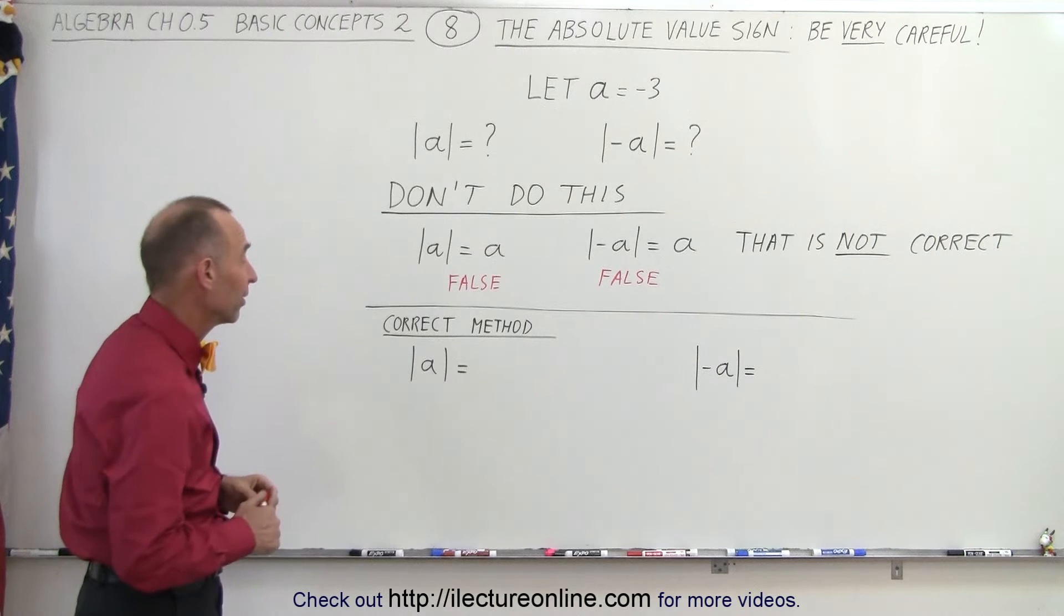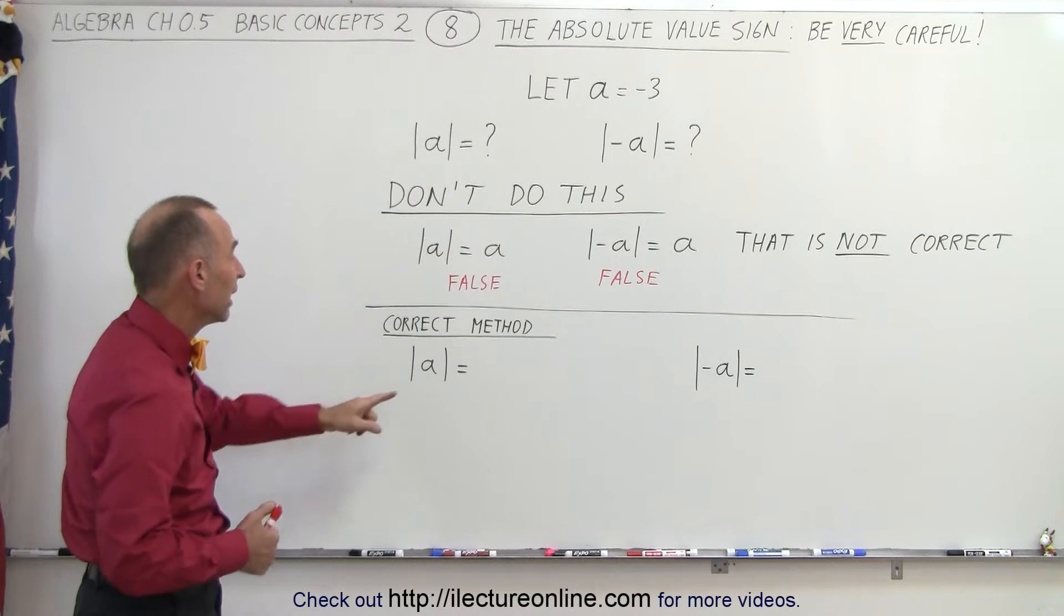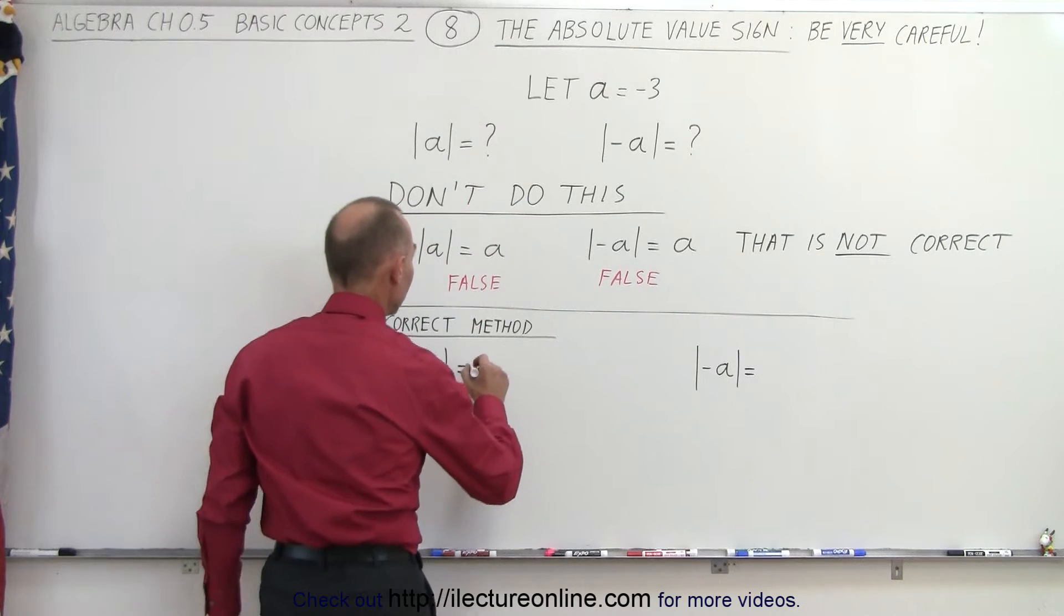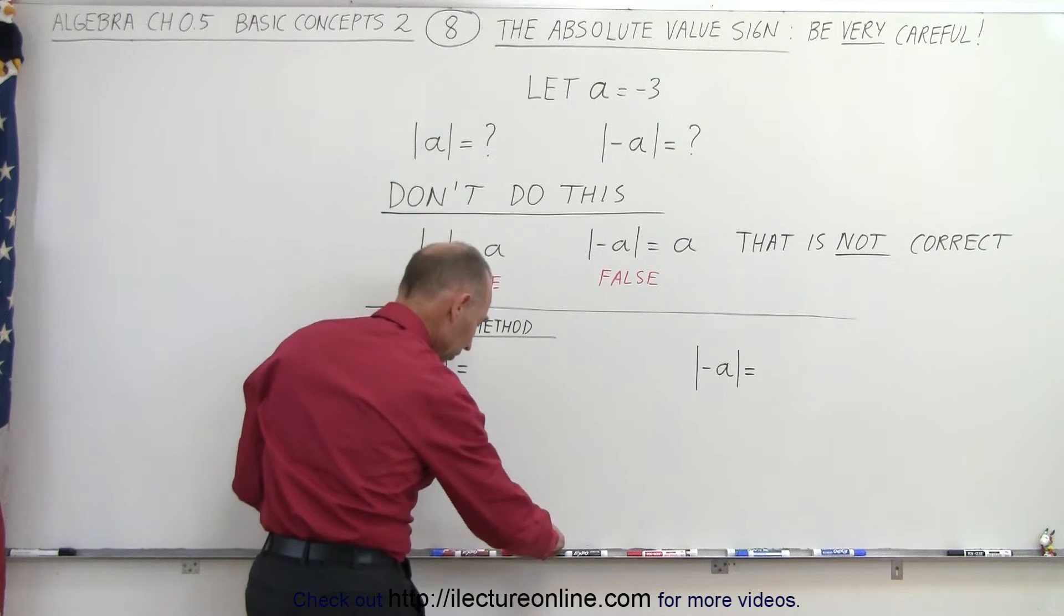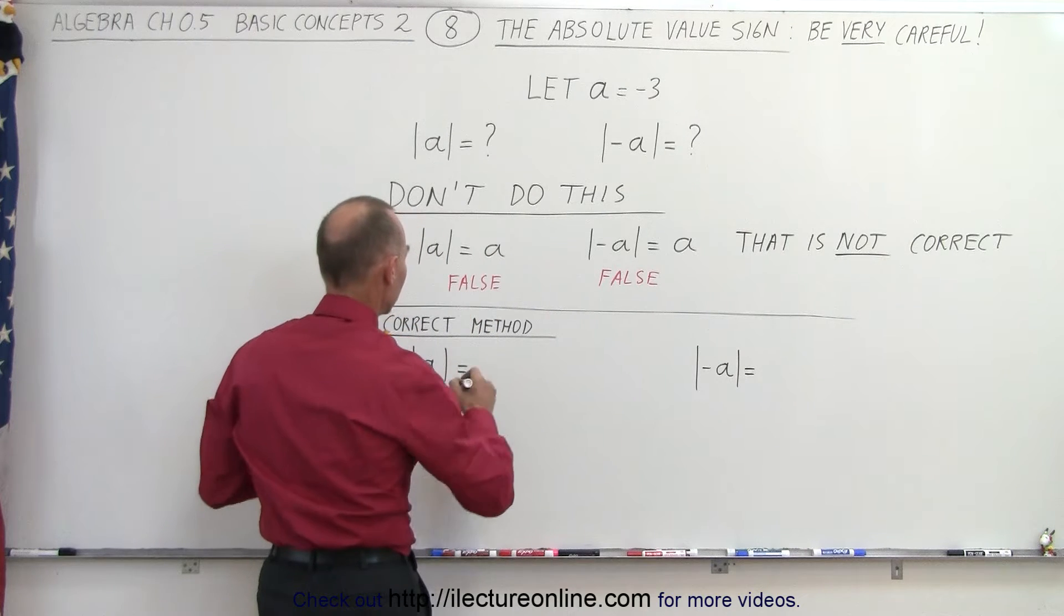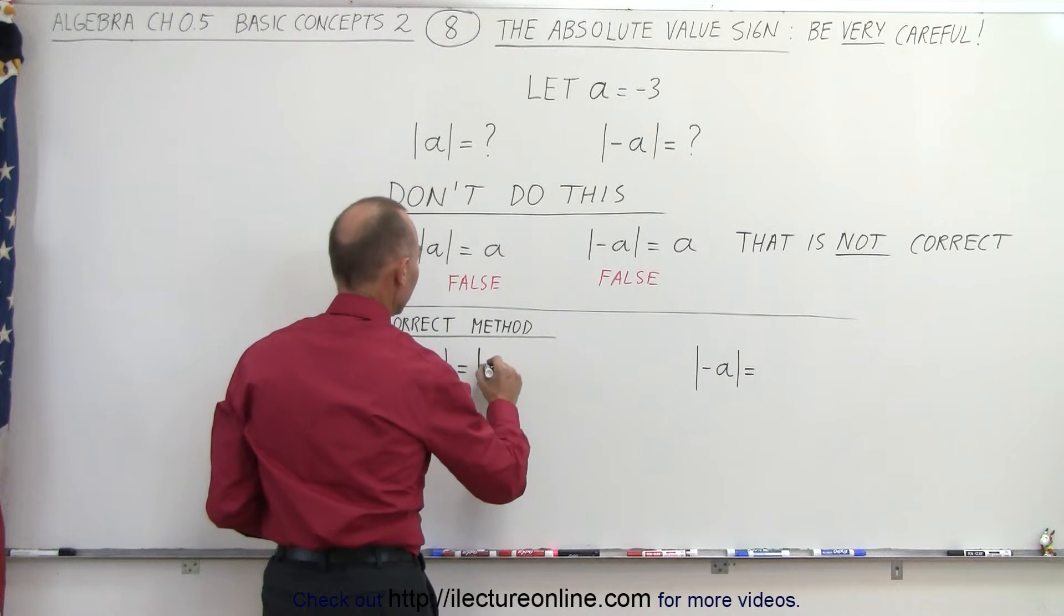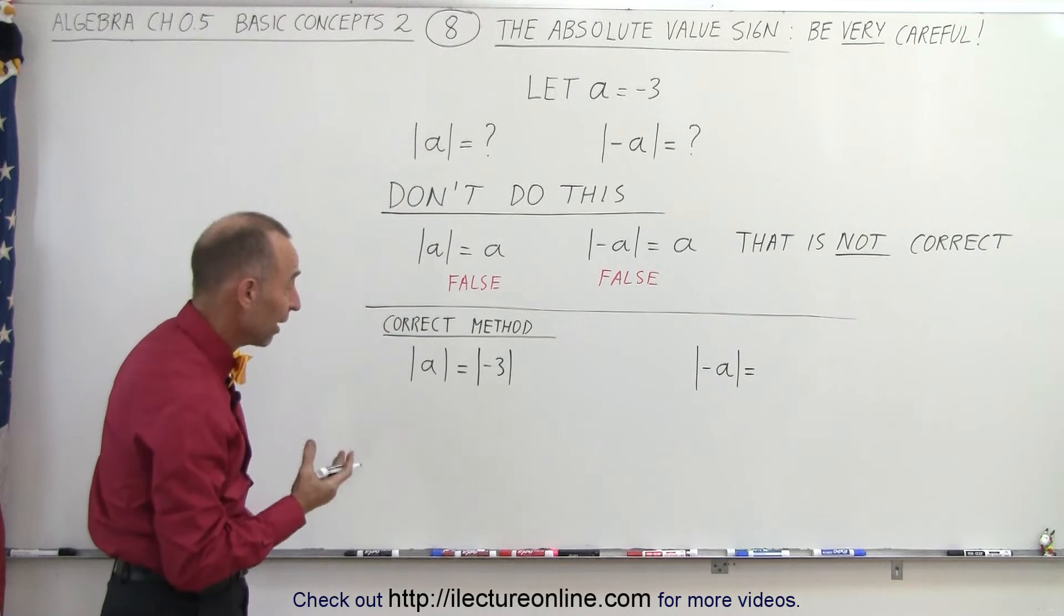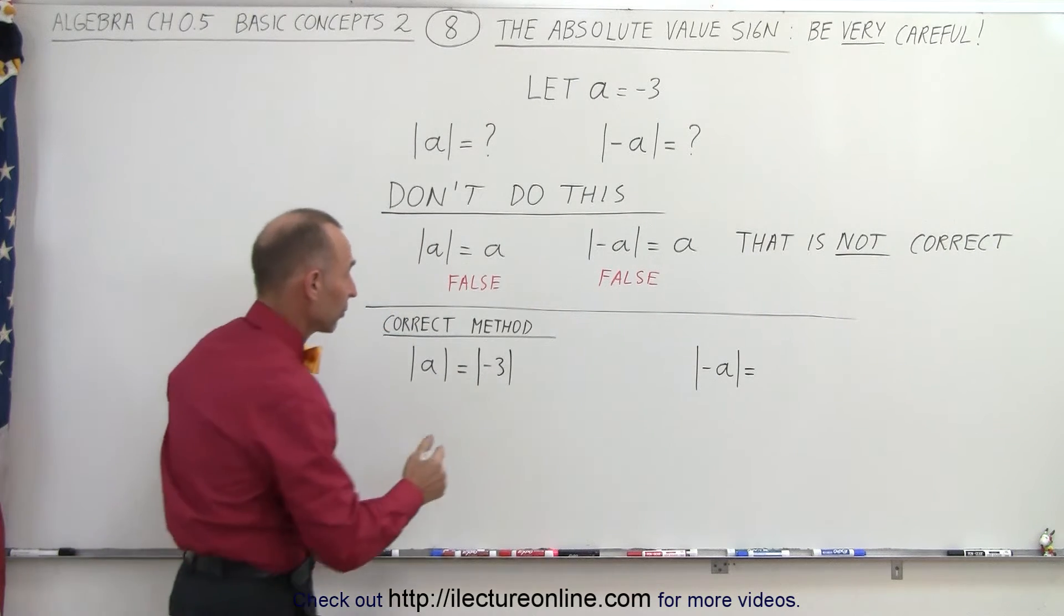What should we do instead? Well, the first thing we should do is replace a by what a is equal to. So that means this is the same as the absolute value of negative 3. Now we know what to do with this. The absolute value of negative 3 is equal to 3.